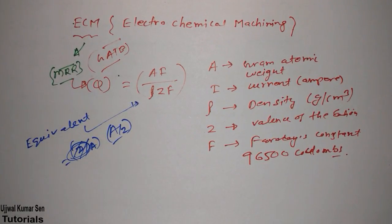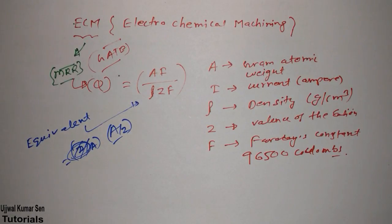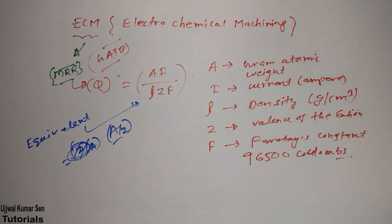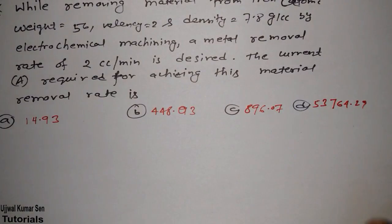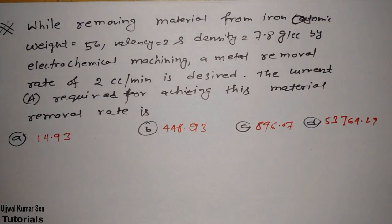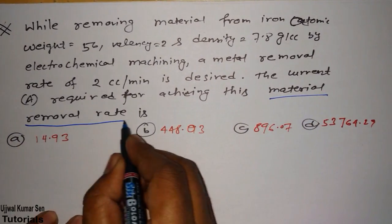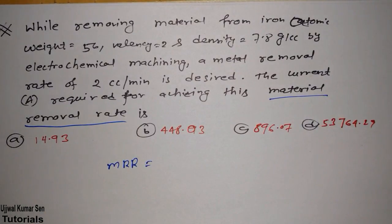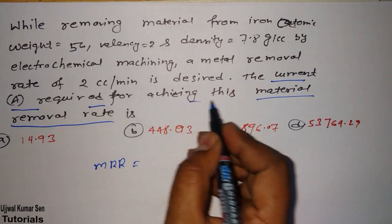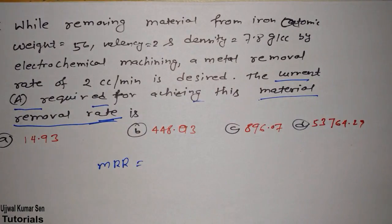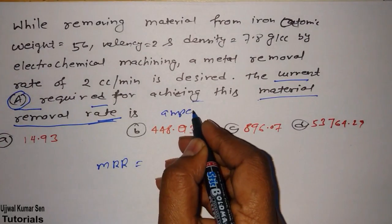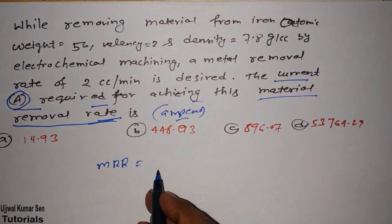Now let's move to numerical problems that have already been asked in GATE. In the first question on screen, we need to find the current in amperes required for achieving a given material removal rate. So we need to rearrange the MRR formula to solve for current I.